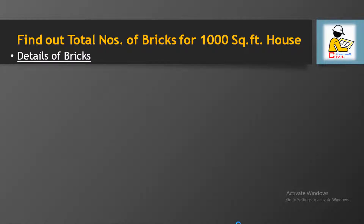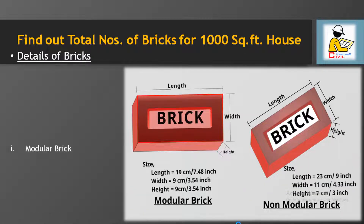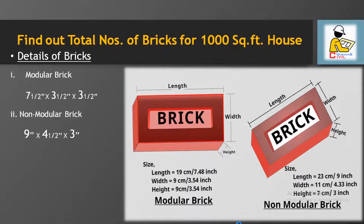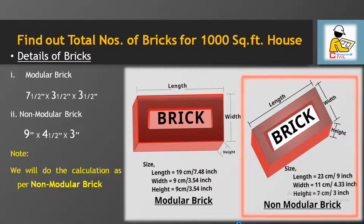To calculate the number of bricks for a 1000 square feet house, we have basically two types of bricks: modular brick and non-modular brick. Modular bricks have dimensions of 7.5 inch by 3.5 inch by 3.5 inch, and non-modular bricks have dimensions of 9 inch by 4.5 inch by 3 inch, as clearly shown in the picture. In modern India, we always use non-modular bricks for maximum residential building projects.